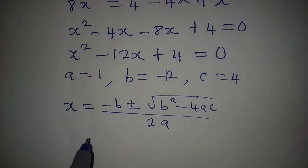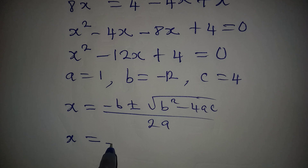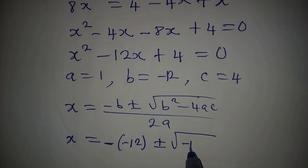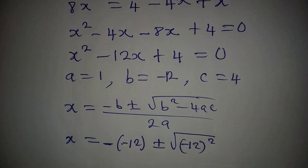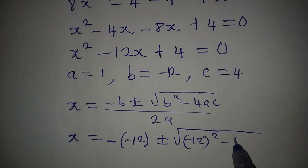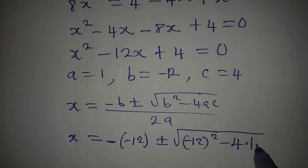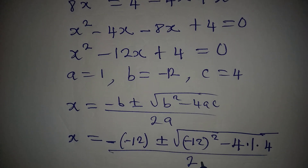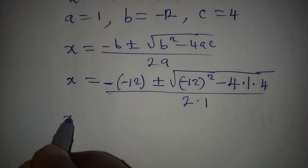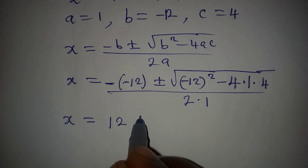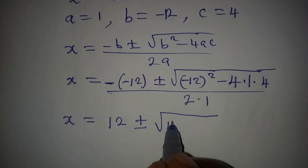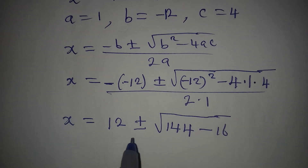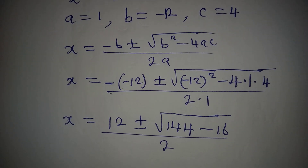Substituting into the formula: x = [−(−12) ± √((−12)² − 4·1·4)] / (2·1). That gives x = [12 ± √(144 − 16)] / 2.